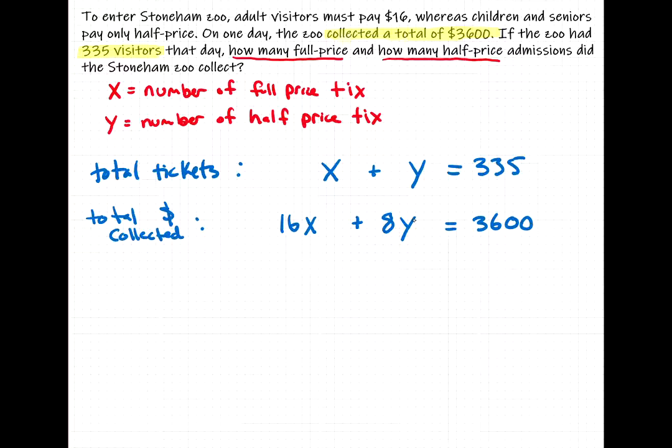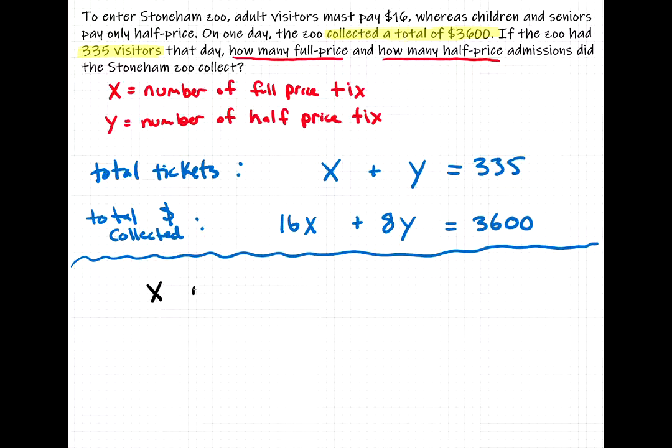So there is our system of equations. And now we could solve this using either substitution or elimination. I'm going to use elimination because that's my preferred method. So at this point, this is basically phase one of the word problem, the initial setup. And now it's no longer a word problem because we've converted those words to equations. So now we just have a system of equations to solve: x plus y equals 335, 16x plus 8y equals 3600.